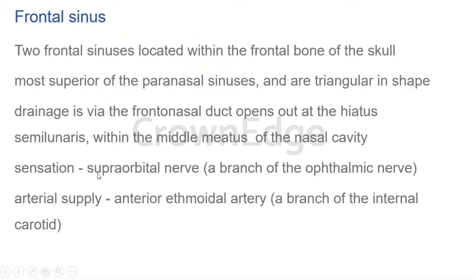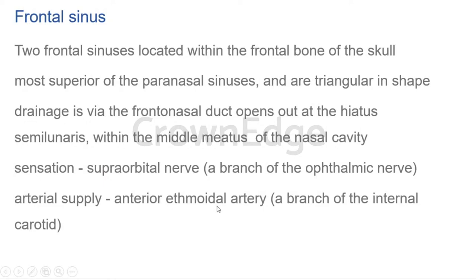The frontal sinus has rich nerve and blood supply. The nerve supply is from the supraorbital and supratrochlear nerves, which are branches of the ophthalmic nerve — a sensory branch of the trigeminal nerve. The blood supply is from the anterior ethmoidal artery, a branch of the internal carotid. All structures in the forehead are supplied by branches of the internal carotid.